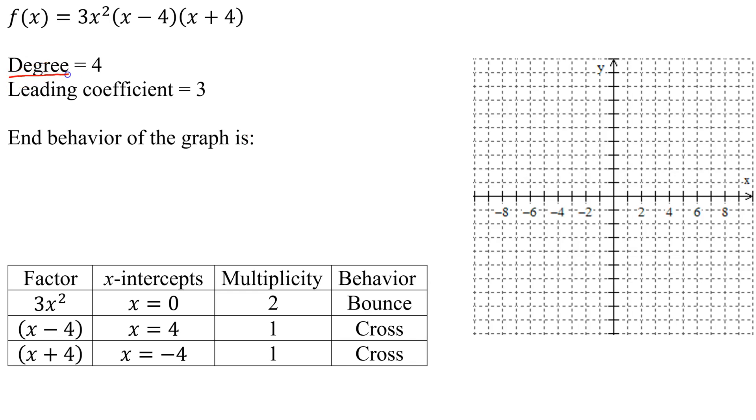That comes from the degree and the leading coefficient. If the degree is even, both ends of the graph point in the same direction. And if the leading coefficient is positive, both ends will point up. So that means my end behavior of the graph is going to look like this. Both ends pointing up.